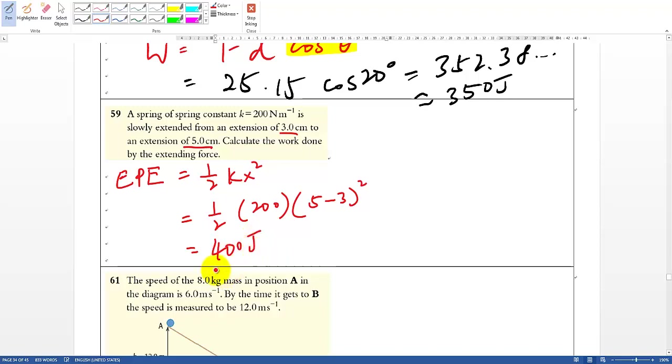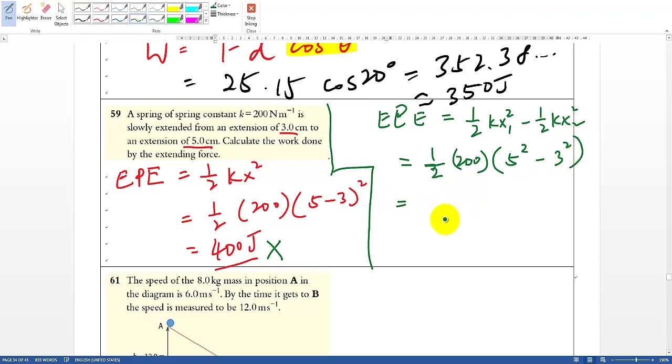Let me show you the correct version and I'll explain later why. This is wrong. The correct one: EPE, how you do it should be you calculate both of them separately. You can do ½kx₁² minus ½kx₂² something like that. Of course, you can extract the k and half out, so you have 200 here, and then this is 5² minus 3². You will have the answer of 1600 Joules, and obviously these two are different numbers.